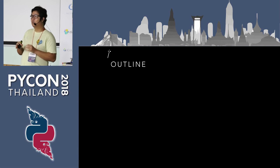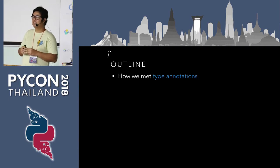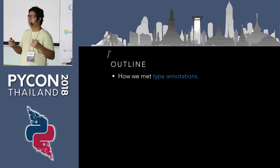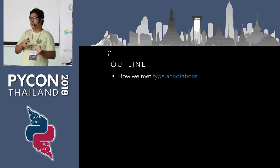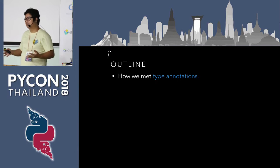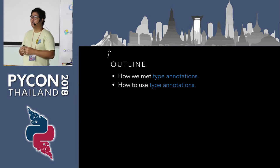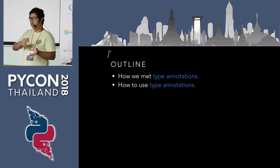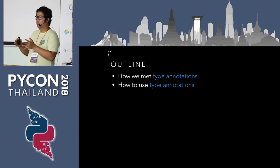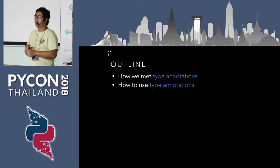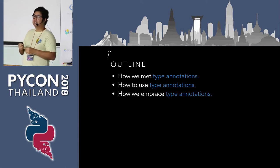Today my talk is going to be divided into three parts. First is how we met with type annotation — what problems we faced and what solutions we tried before ending up with type annotations. Second, I'll guide you through some basic concepts about typing and how to use types in Python, walking through examples of function annotations and variable annotations. The last part is how we embraced type annotation in our team.